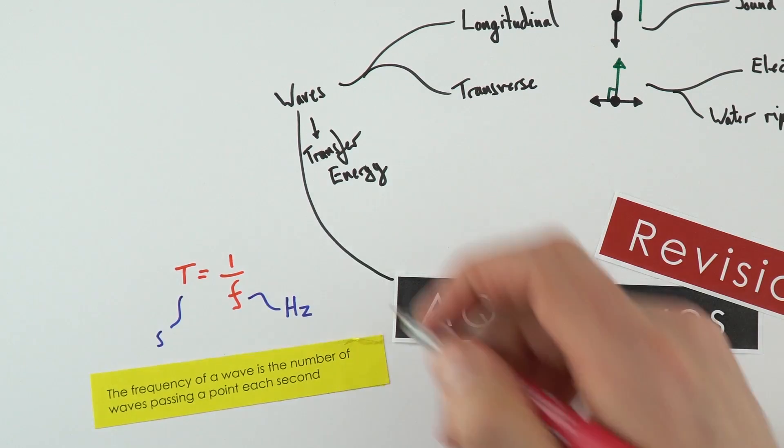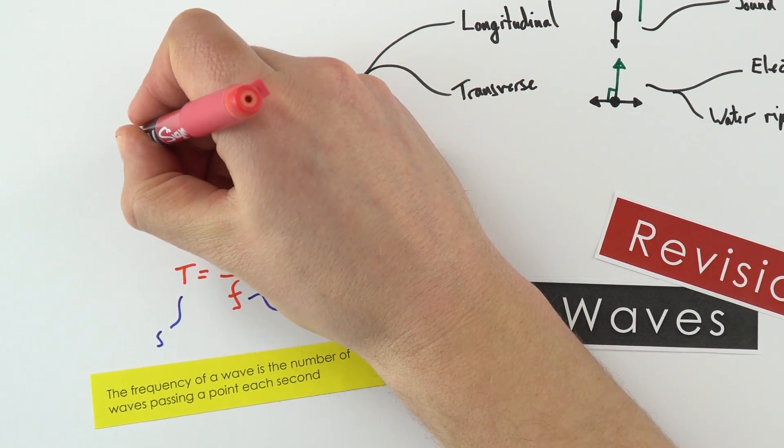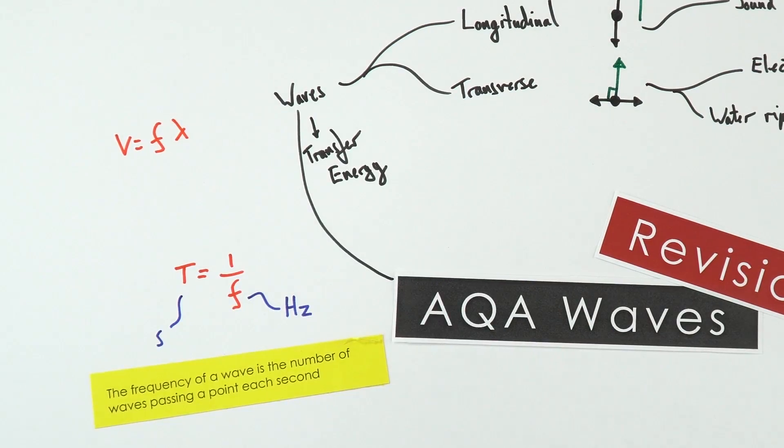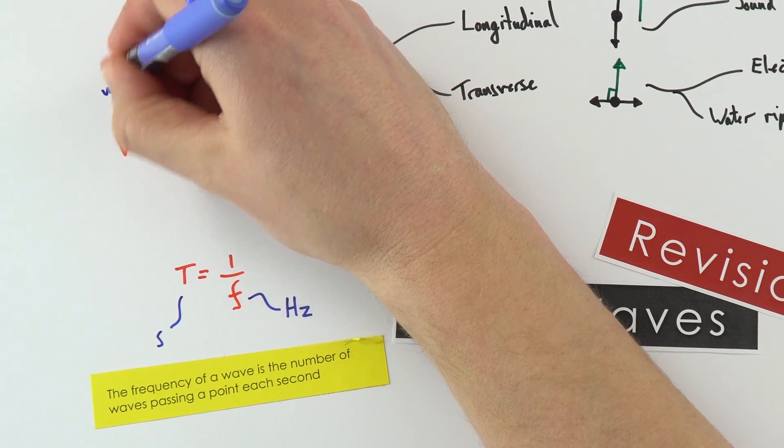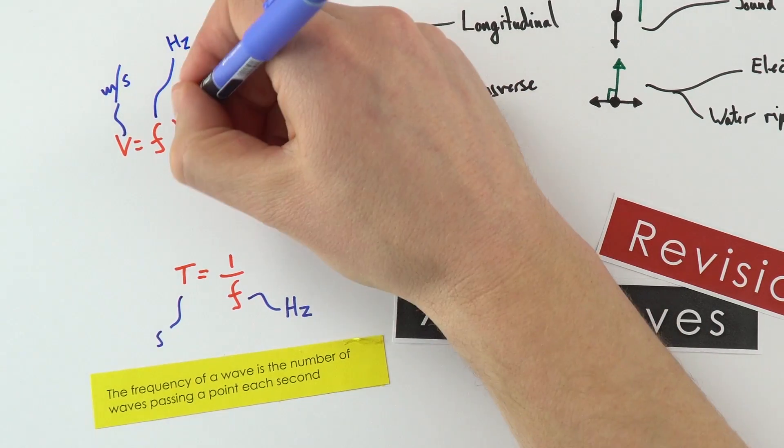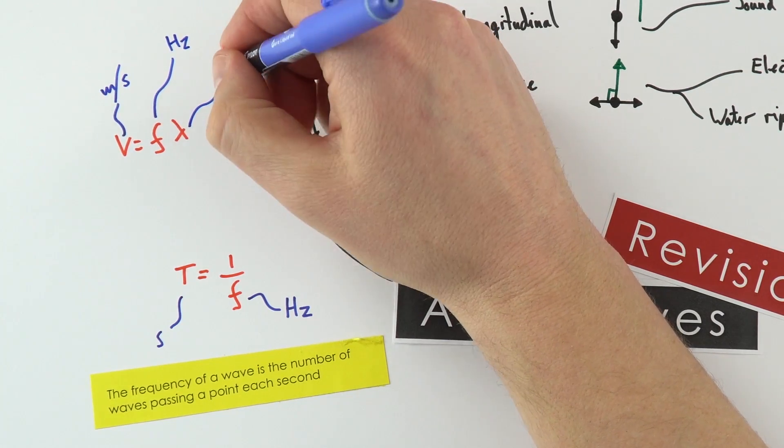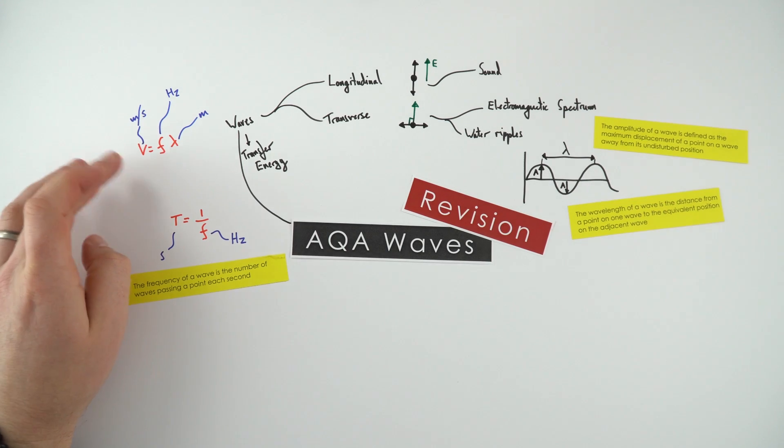The other equation that is really important to know is the wave speed equation: V equals F times lambda. V is our wave speed, measured in metres per second. We measure frequency in hertz, and the wavelength is measured in metres.